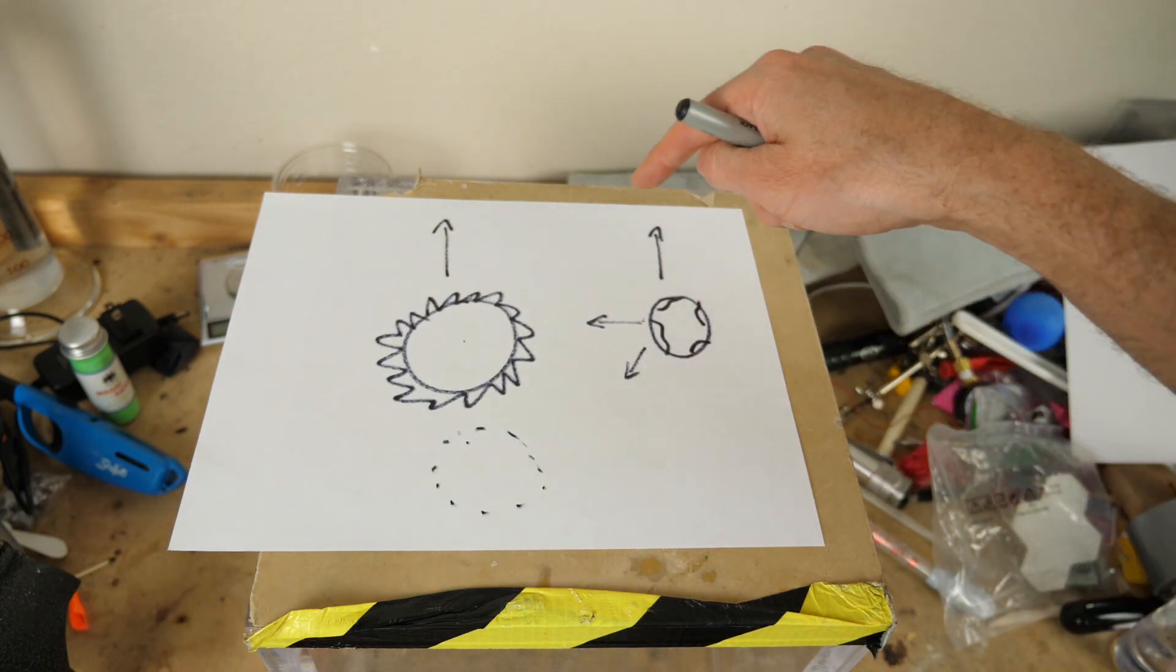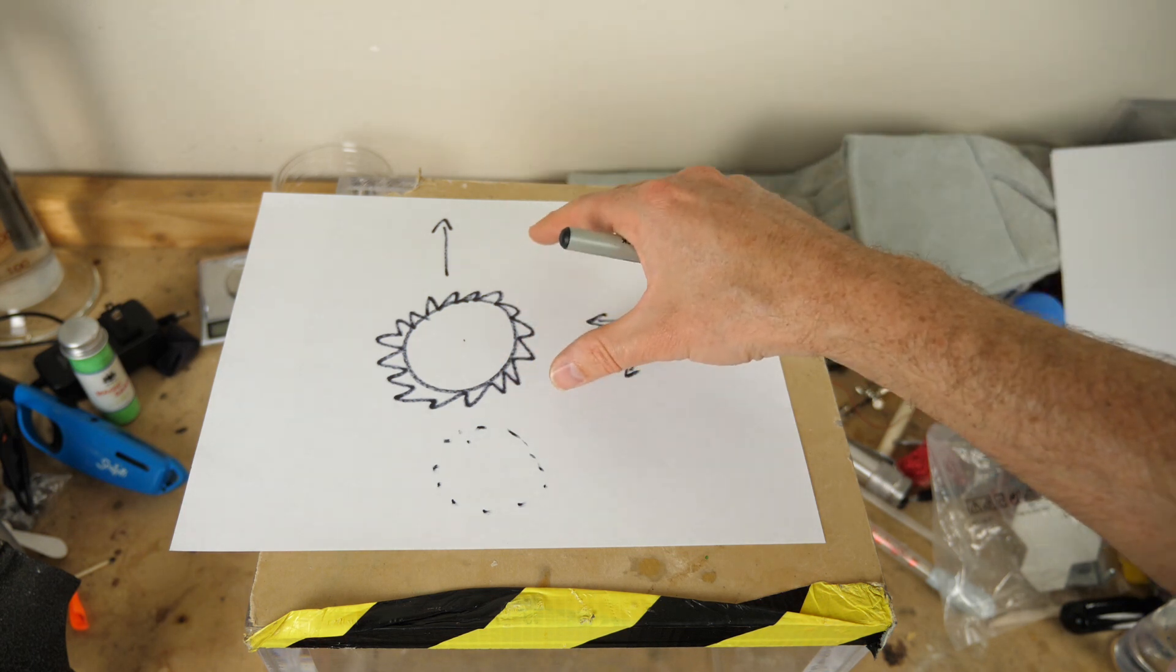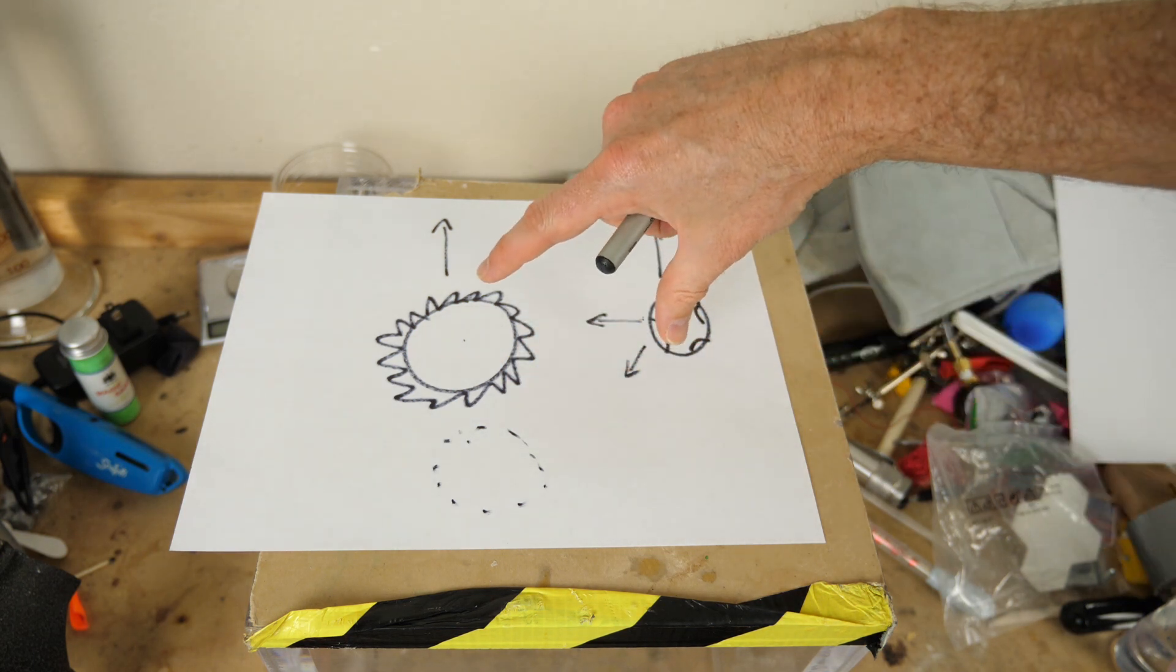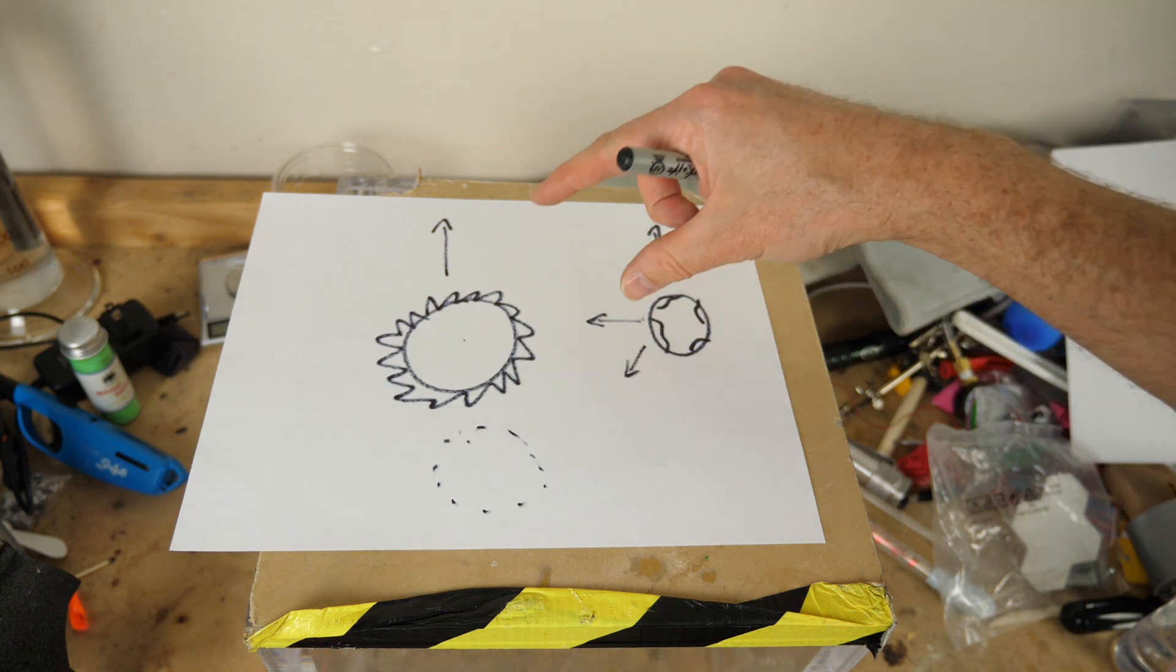So basically what I'm saying is that the theory of general relativity shows that even though gravity doesn't propagate instantaneously, for two bodies moving at a constant velocity, it appears that it's instantaneous.